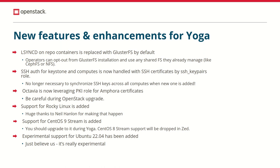We have also added support for several new distributions. Neil has brought in Rocky Linux and helps with its maintenance and support. We've also just merged CentOS 9 Stream support. As OpenStack drops Python 3.6, it's highly likely that Yoga will be an upgrade release for CentOS, because CentOS 8 Stream doesn't have Python 3.8 bindings for libvirt. And finally, Ubuntu 22.04 experimental support has been added. At the moment, some repositories like MariaDB or RabbitMQ still don't have Jammy versions, so its support is really experimental. We expect things to stabilize in Zed.